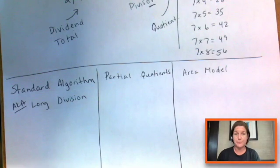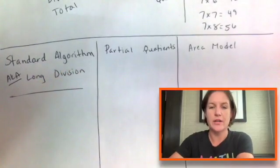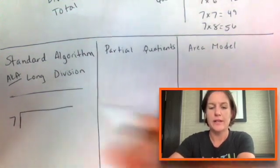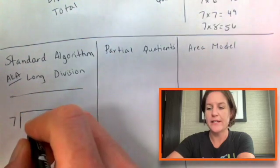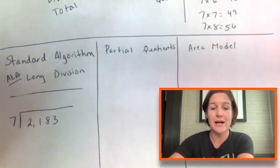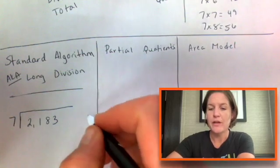We'll start with standard algorithm, which is also known as long division. So what we're going to do is take our divisor and that goes outside and the dividend 2,183 will go inside the box. And I go through these steps.